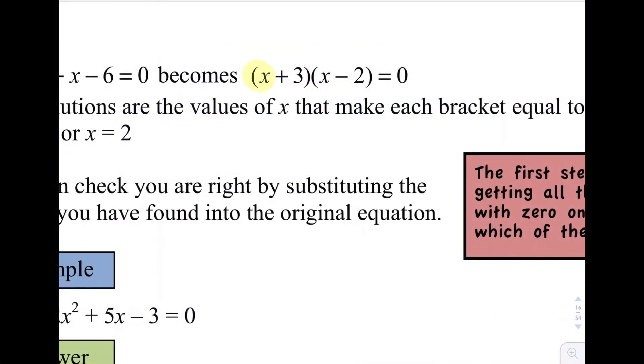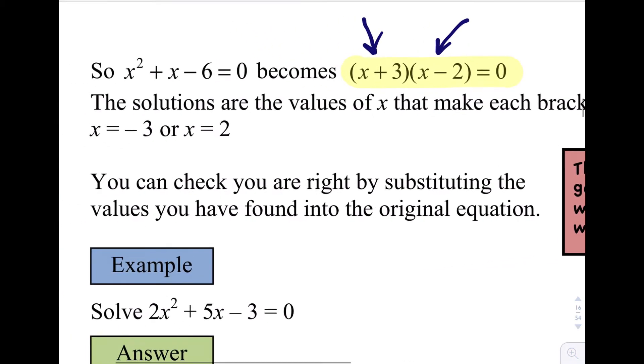When it is written like this, it's really easy to see what the solutions for that quadratic equation are. They're the two values of x that make each bracket zero. So in this case, the value of x that we need is negative three, and in this case here, the value of x that we need is two. So the two values of x here are negative three and two.